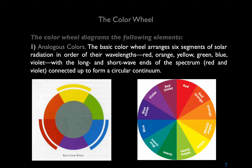A little bit of review: we have the classic color wheel. The basic color wheel arranges six segments of solar radiation in order of their wavelengths — red, orange, yellow, green, blue, violet — with the long and short wave ends of the spectrum, red and violet, connected to form a circular continuum. The spectrum can be divided more elaborately, as in the 10-hue Munsell wheel used in industry, but the six-color wheel is generally preferred by artists as a simpler diagram of basic relationships.